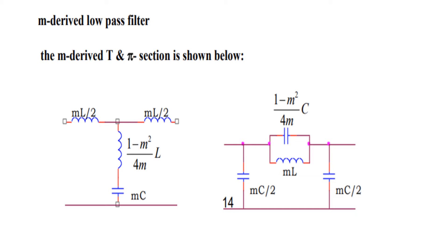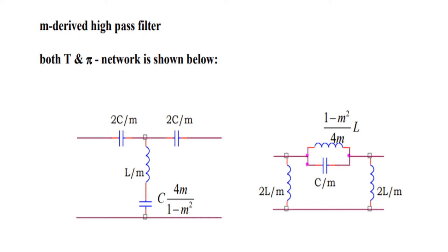In the pi network, the series arm has a parallel combination of capacitance and inductance. The value of capacitance is (1 - M²) / (4M) into C, and inductance is ML. In the shunt arm, two capacitances are in parallel: MC/2 and MC/2.